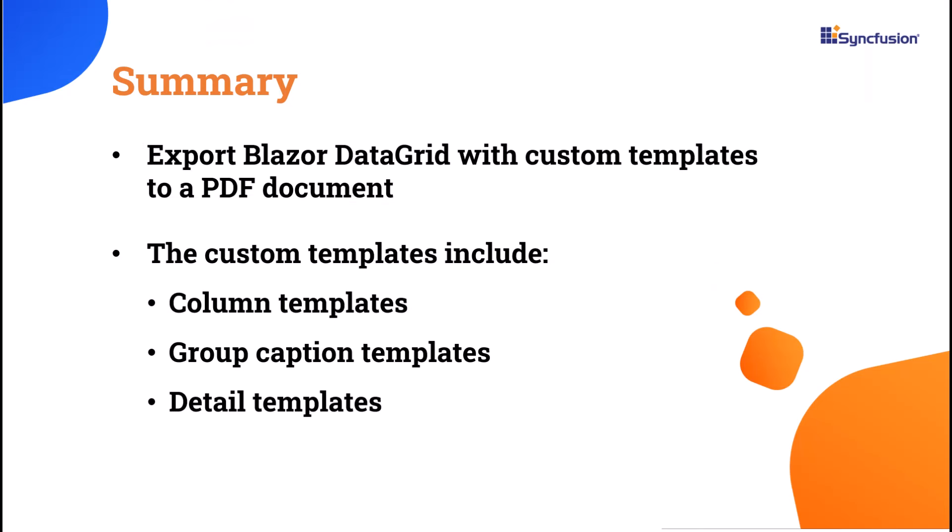Now let me summarize. I showed you how to export the Syncfusion Blazor DataGrid component with custom templates to a PDF document, and also showed you various templates like column template, caption template, and detail template. If you want to see the working code of this example, you can download it from the GitHub link in the description below. I've also provided a link to see if you qualify for a free community license to use all our Blazor components. If you find this video useful, don't forget to click the like button and subscribe to our channel. Thanks for watching.